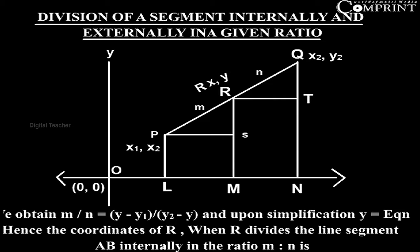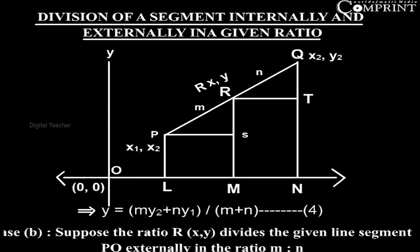Hence the coordinates of R when R divides the line segment PQ internally in the ratio m:n are ((mx₂ + nx₁)/(m + n), (my₂ + ny₁)/(m + n)) (equation 4). Case B: